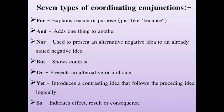'Or' is used to present an alternative or a choice — when there is a choice, we use 'or'. After that, 'yet' introduces a contrasting idea that follows the preceding idea logically — to define the contrast between two things, we use 'yet'. Then 'so' indicates effect, result, or consequence — any outcome or result.